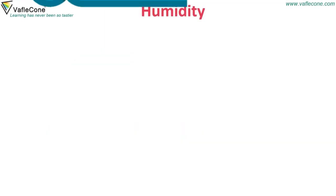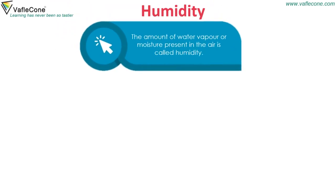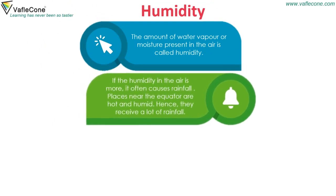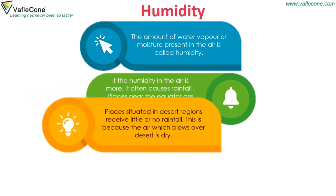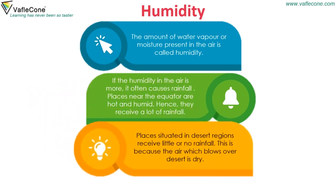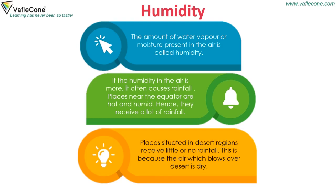Humidity is the amount of water vapour or moisture present in the air. If the humidity in the air is more, it often causes rainfall. Places near the equator are hot and humid, and hence they receive a lot of rainfall. Places situated in desert regions receive little or no rainfall, because the air which blows over deserts is dry.